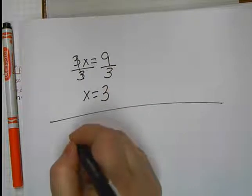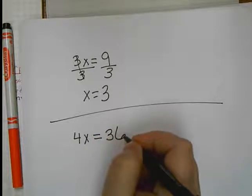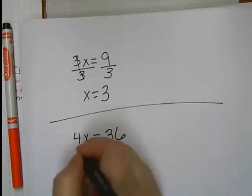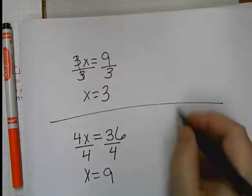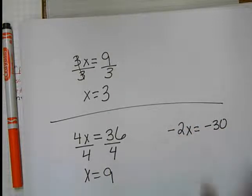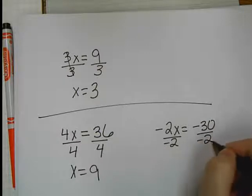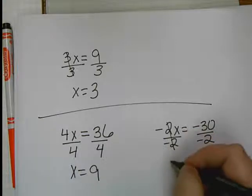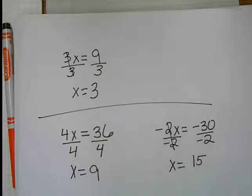All right, let's try another one. Hit pause. All right, I'm going to divide by 4. X equals 9. What if it's negative? If this is negative, you still have to divide by a negative. So, I divide this by a negative. The only reason I have to divide by a negative is so they cancel each other out equally. So, that leaves me with X equals, what's negative 30 divided by negative 2? A positive 15. Okay, so that was the easiest part.